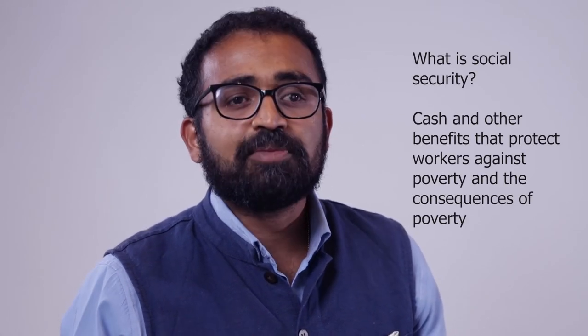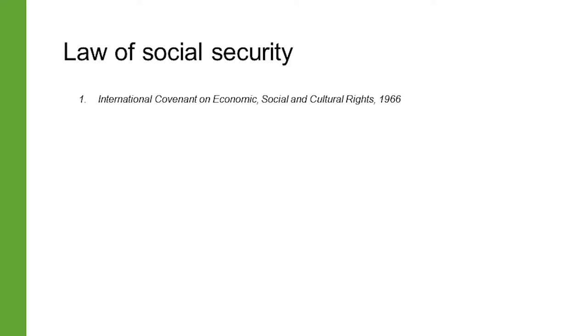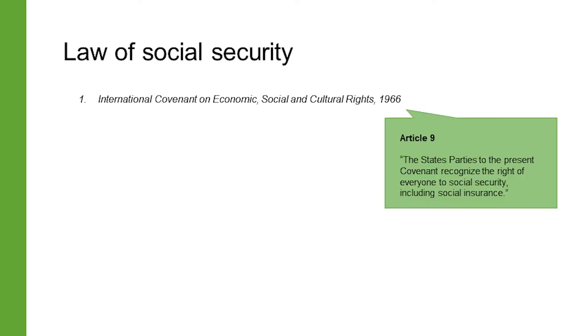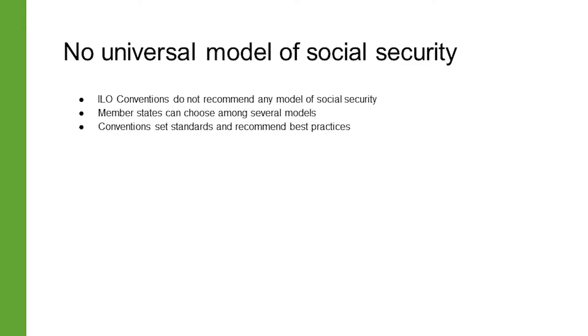Social security or social protection refers to schemes that provide benefits in cash or in kind that ensure access to medical care and health services and to income security. Illness, unemployment, employment injury, maternity, increased family responsibilities, invalidity, loss of the family breadwinner, retirement, and old age are some of the circumstances when workers need social security. Article 9 of the International Covenant on Economic, Social and Cultural Rights recognizes the right of everyone to social security including social insurance. The ILO conventions do not advocate a particular model of social security; members have a range of options and flexibility to progressively achieve universal coverage, setting out minimum standards of protection to guide the development of benefit schemes and national social security systems based on good practices from all regions of the world.